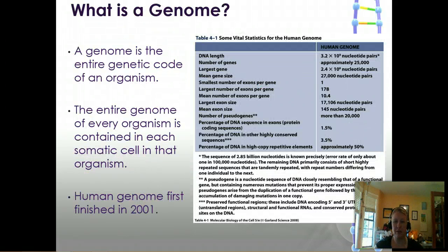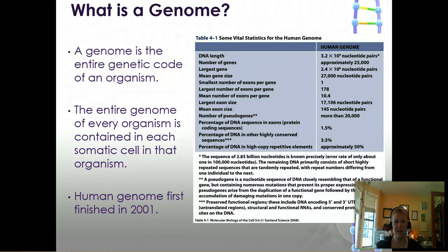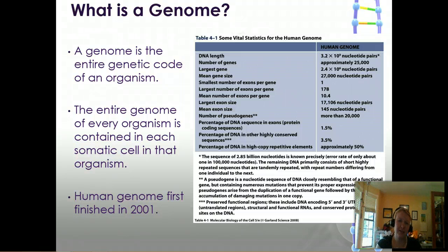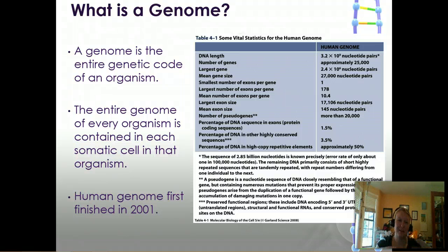So let's talk about what the genome is. The genome is the entire genetic code of an organism. I have a genome, you have a genome, my dogs have a genome — everybody has their own genome, and they're all slightly different, which is what makes us slightly different. This genome is contained in every somatic cell of your body, meaning every cell except your eggs or sperm. Those are your gametes, made in the gonads. Somatic cells contain your entire genome because eggs and sperm have only half as much.